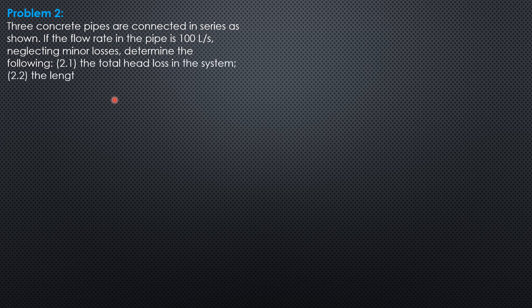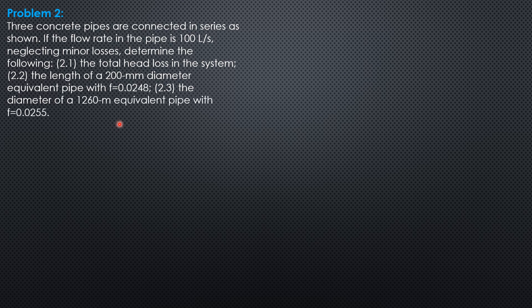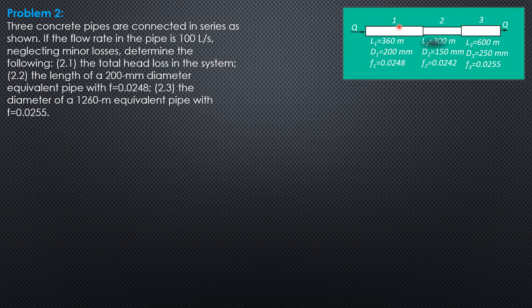neglecting minor losses, determine the total head loss in the system, the length of a 200 mm diameter equivalent pipe with friction factor 0.0248, and the diameter of a 1260 meter equivalent pipe with friction factor 0.0255. So that's the given figure.